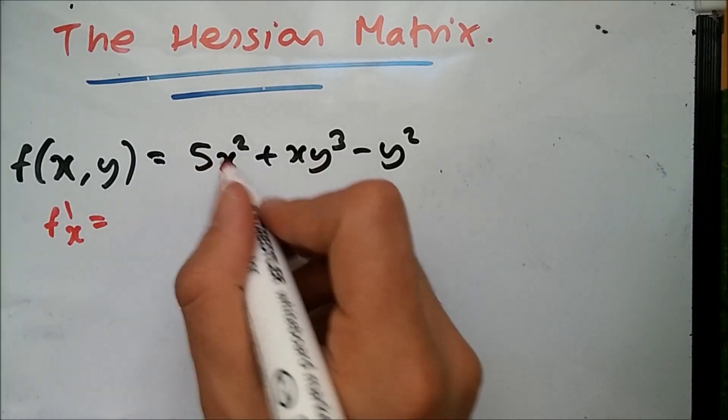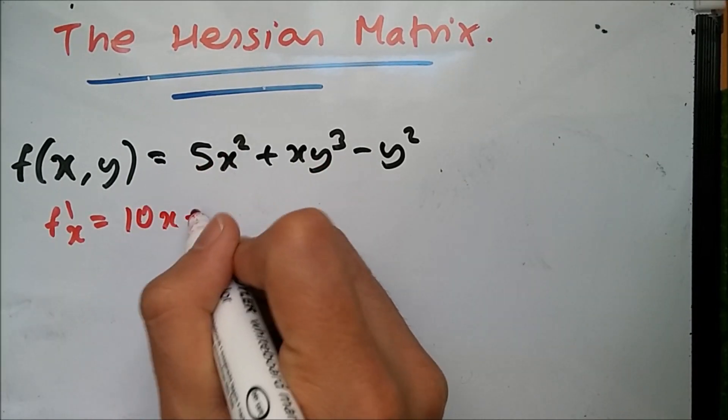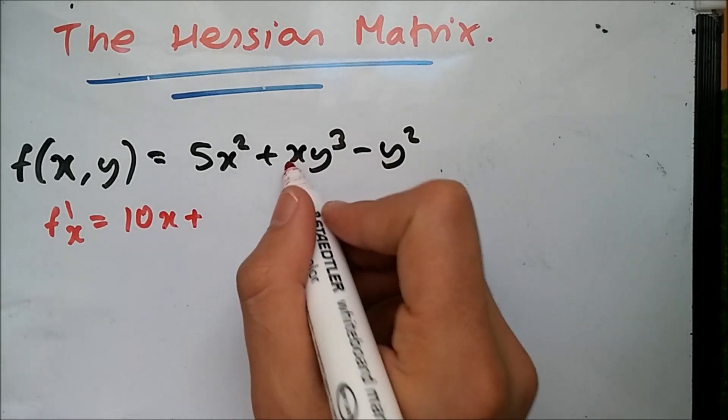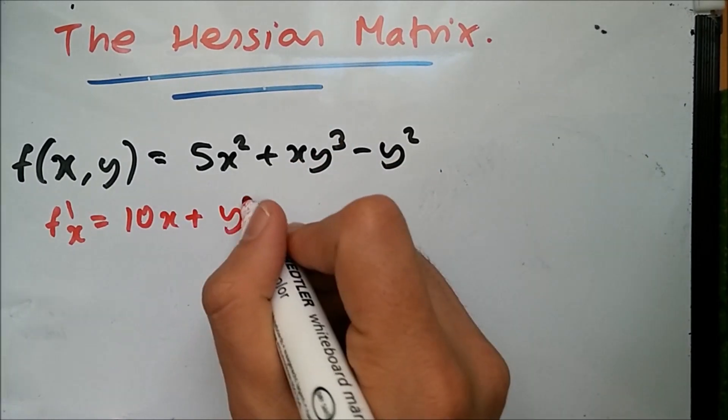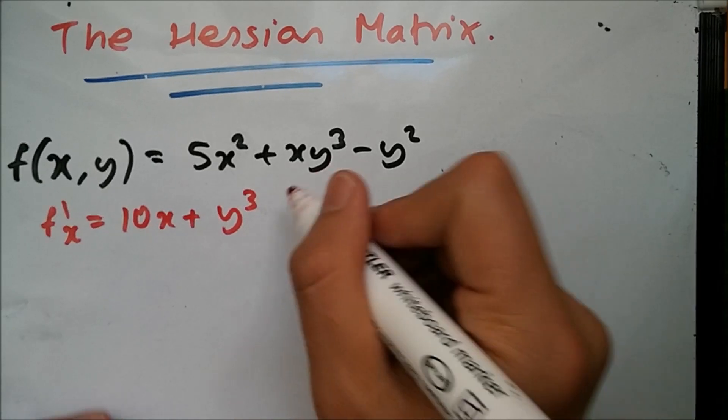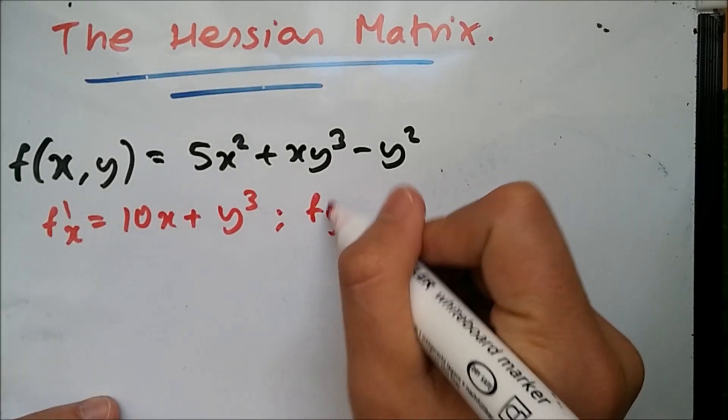The y² term gives us zero. Likewise, differentiating with respect to y, the x² part becomes zero. x is a constant, so y³ becomes 3xy².